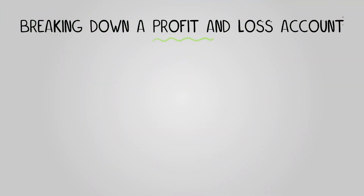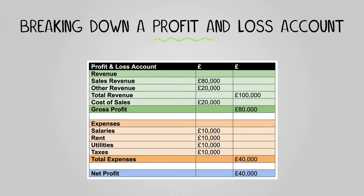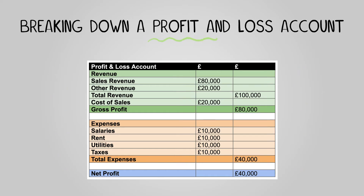Now let's delve deeper into what makes up a profit and loss account. Generally, this account is presented as a table with labels on the left and figures on the right. Occasionally there might be extra columns comparing multiple financial periods.